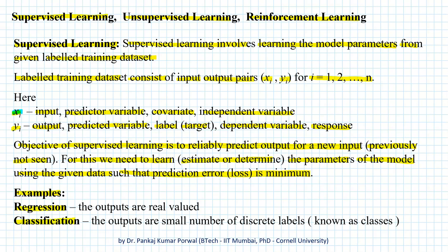In regression, the outputs are real-valued, whereas in the case of classification, the outputs are a small number of discrete labels, which are also known as classes.